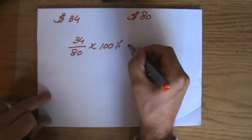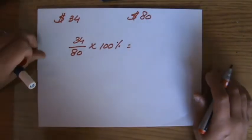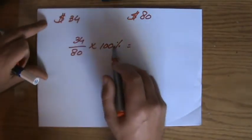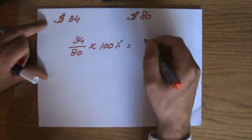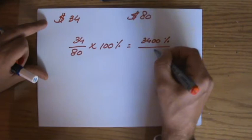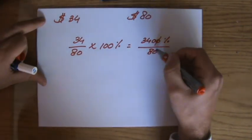Well, you can use a calculator to work this out, although perhaps it's always better if you don't need a calculator for that. So 34 times 100%, that will be 3,400% over 80. Get rid of those common factors, 340 over 8.